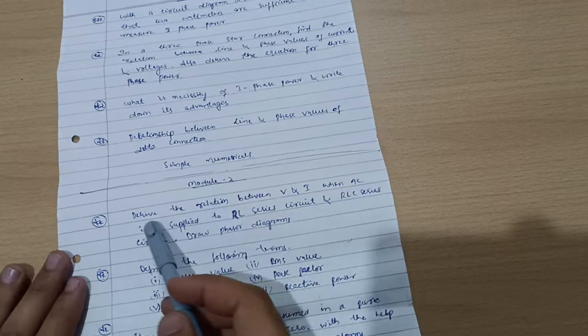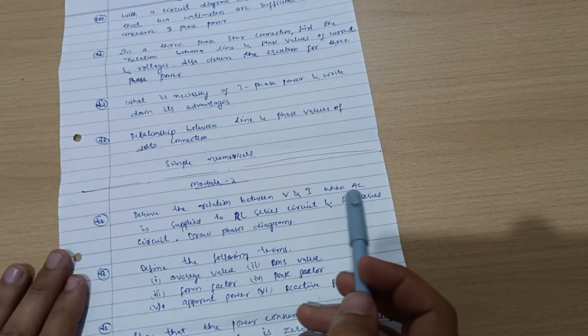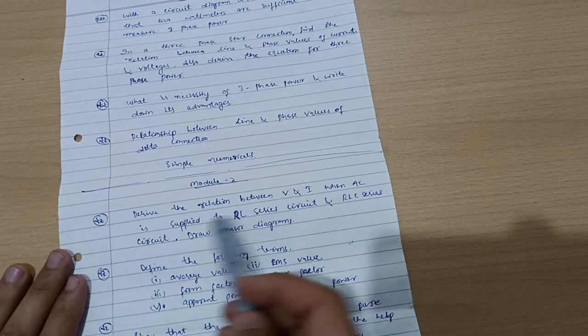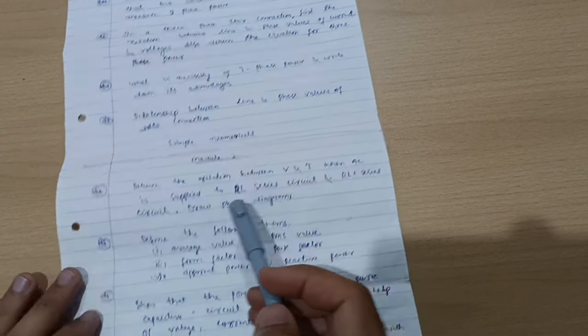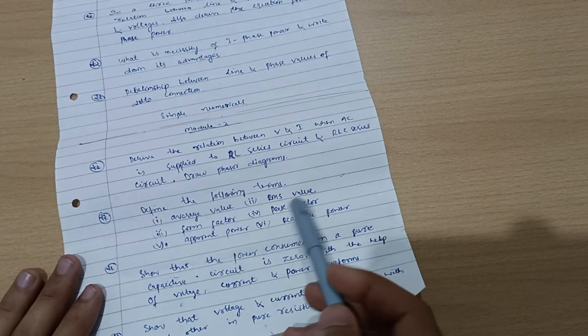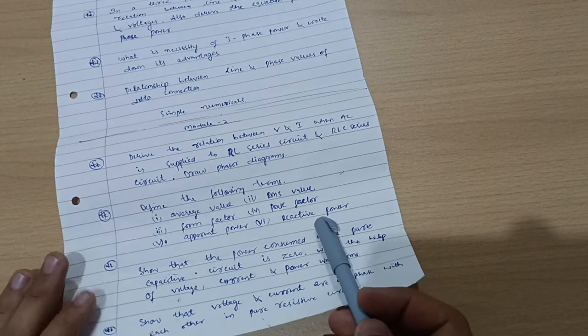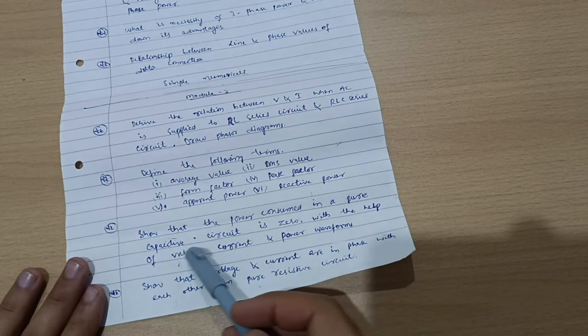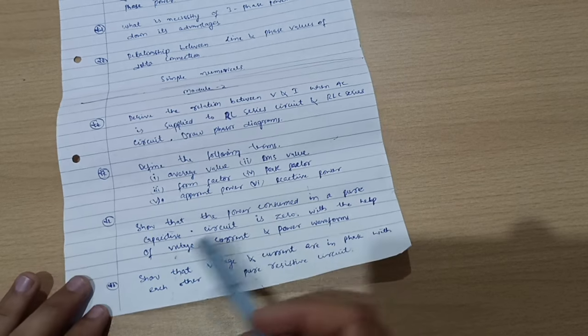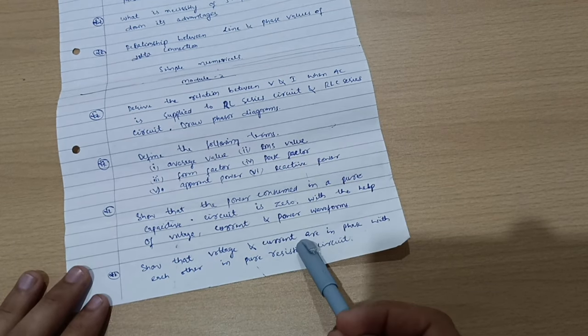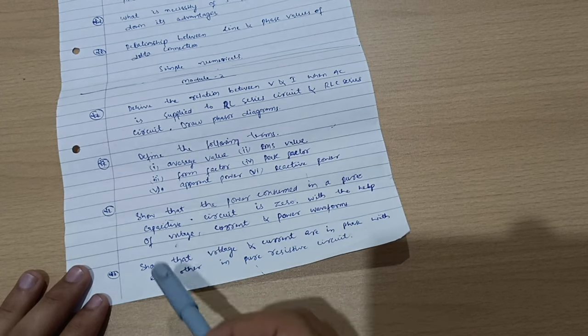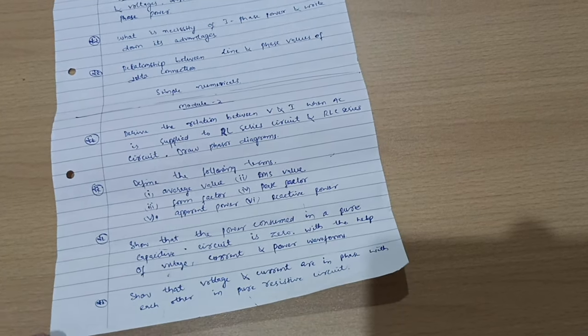Next is Module 2. Derive the relation between V and I when AC is supplied to RL series circuit and RLC series circuit. Draw phasor diagram. Define the following terms like average value, form factor, peak factor, apparent power and reactive power. Show that the power consumed in a pure capacitive circuit is zero with the help of voltage, current and power waveforms and show that voltage and current are in phase with each other in pure resistive circuit. This is all about theoretical portion from Module 2.